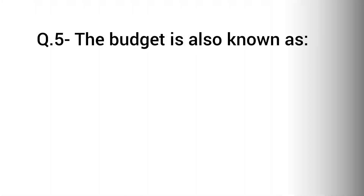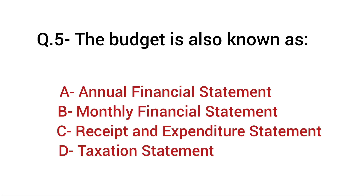Question number 5: The budget is also known as — Option A: Annual financial statement. B: Monthly financial statement. C: Receipt and expenditure statement. D: Tax and statement.